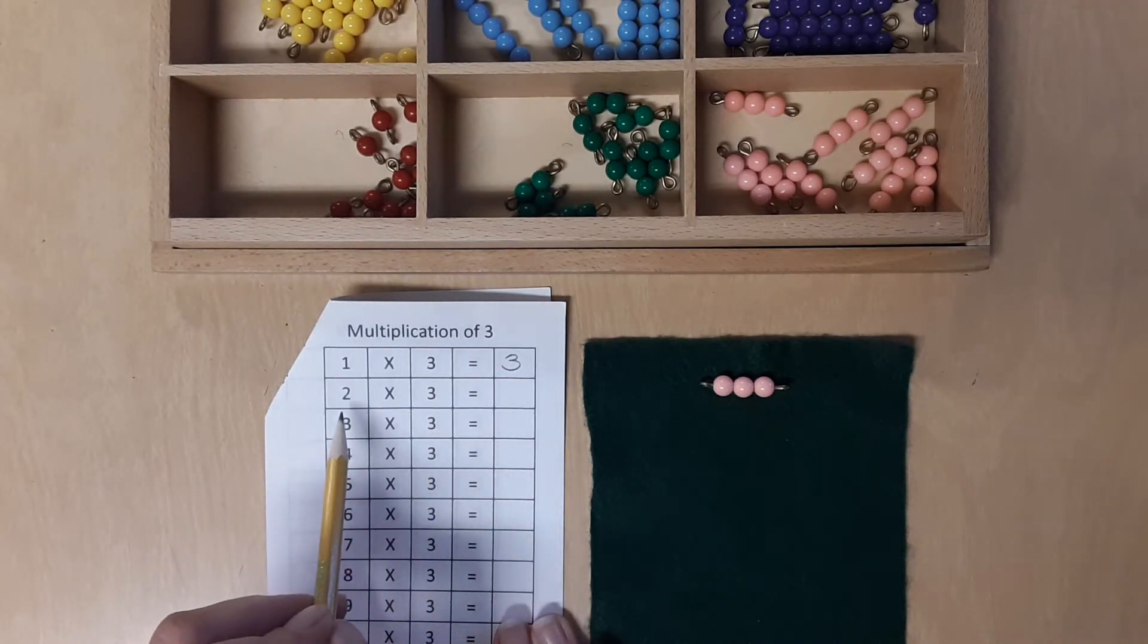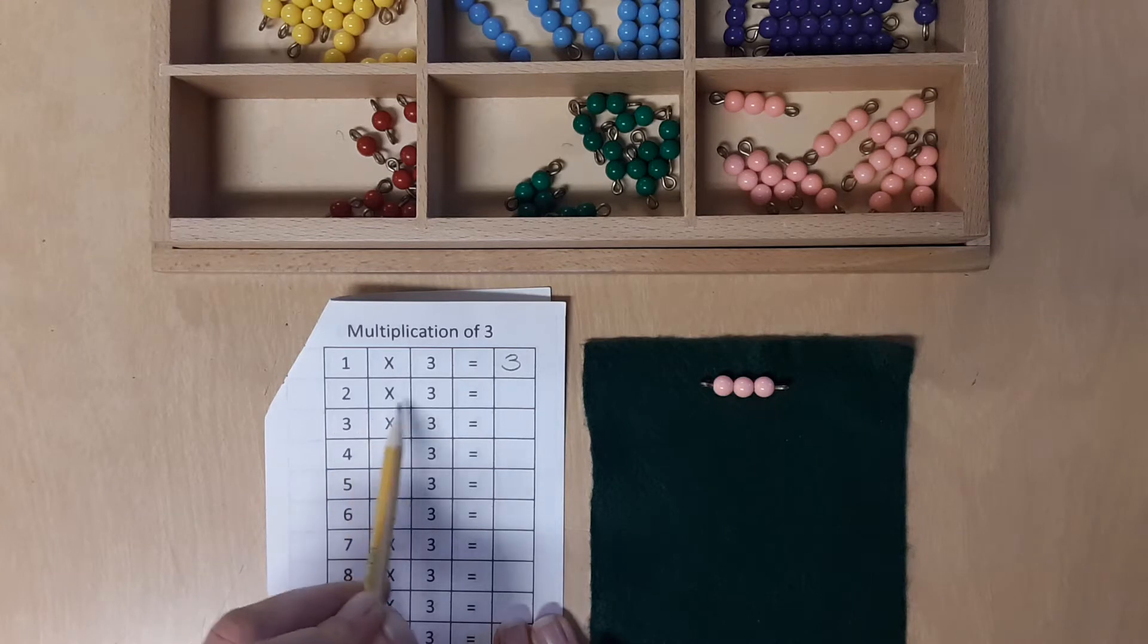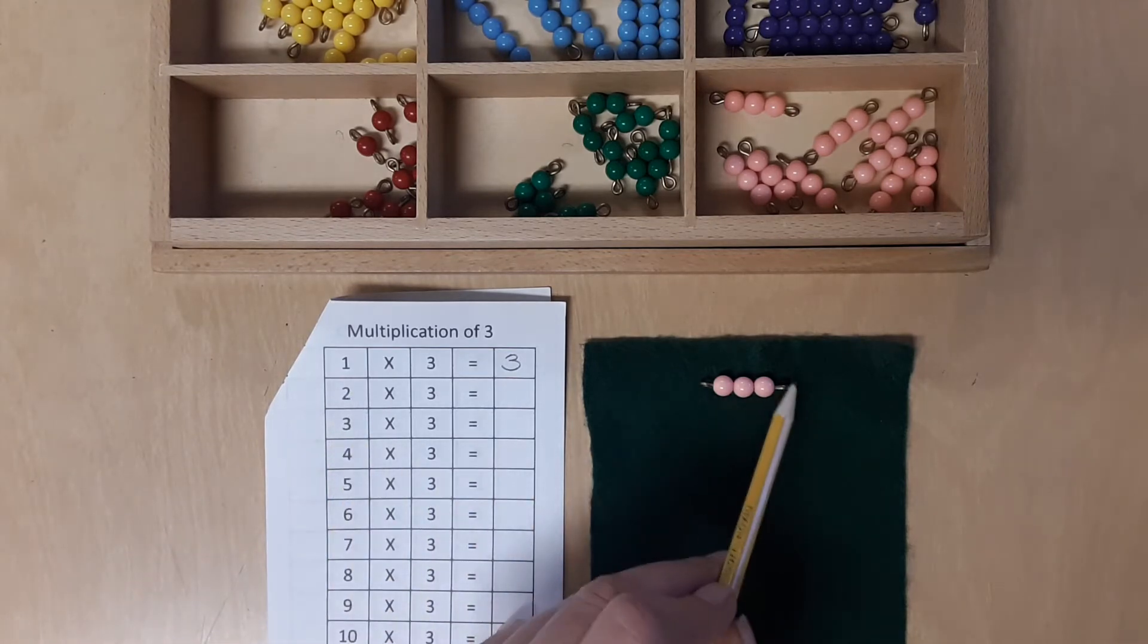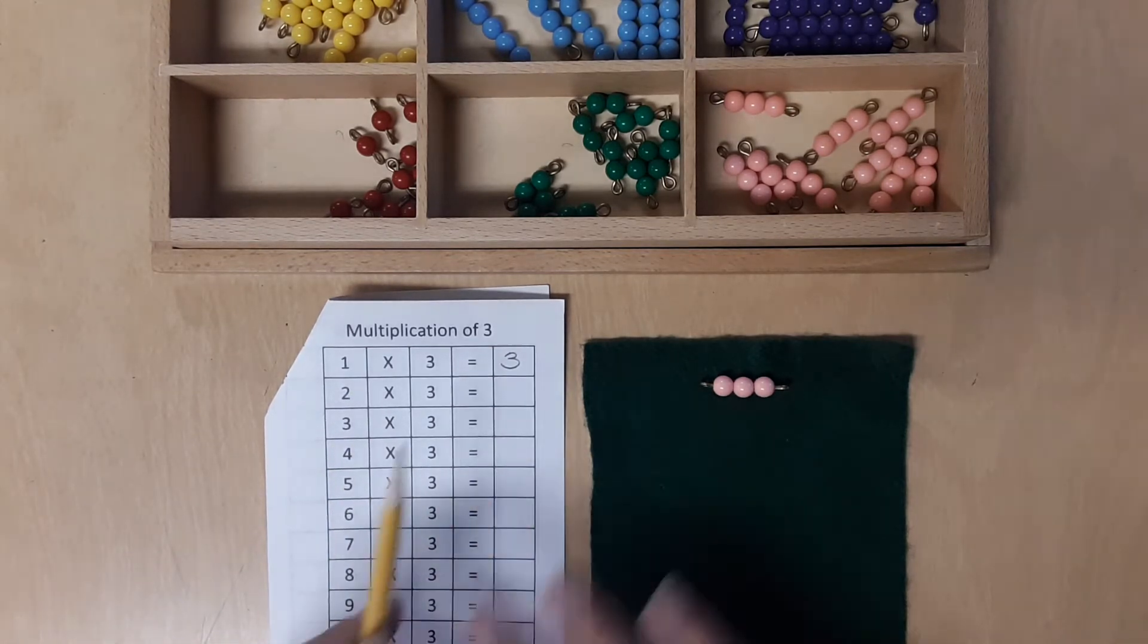Let's read the next equation together. 2 times 3 equals blank. This is telling us we need two of the 3's beads, and we already have one here, so let's grab another one.